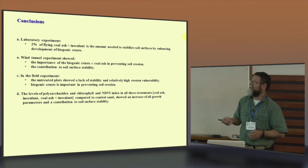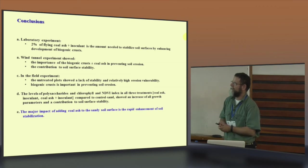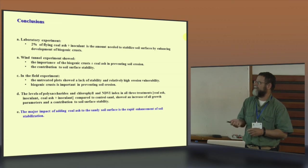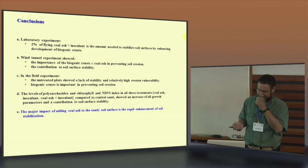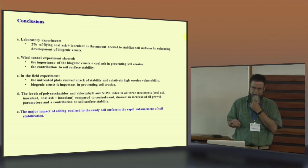The level of polysaccharide, chlorophyll and the NDVI index in the three treatment, coal ash inoculant and coal ash plus inoculant compared to the control sand, show increasing all the parameters and contribution to soil surface stability. And the major impact of adding the coal ash to the sandy soil surface is rapid enhancement of soil stabilization. We reached to this point three months later compared to five to 10 years in natural condition.